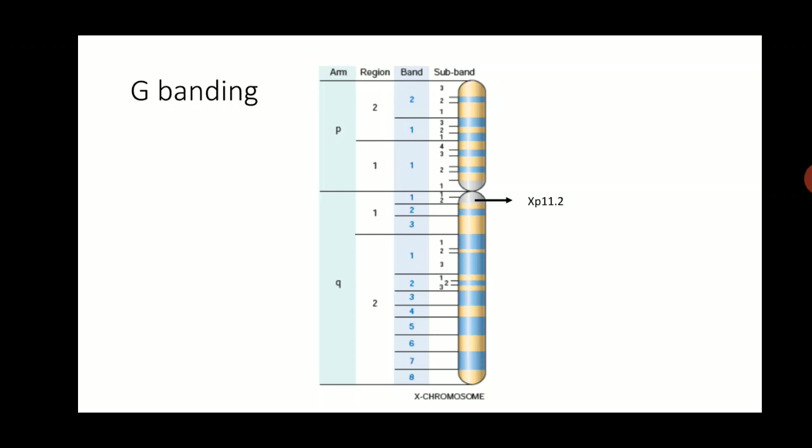The Giemsa stain gives a banded appearance to the chromosome. Areas where the chromosome is condensed give rise to a dark color, and areas where the chromosome is open give rise to a light color, so under the microscope the chromosome appears banded.